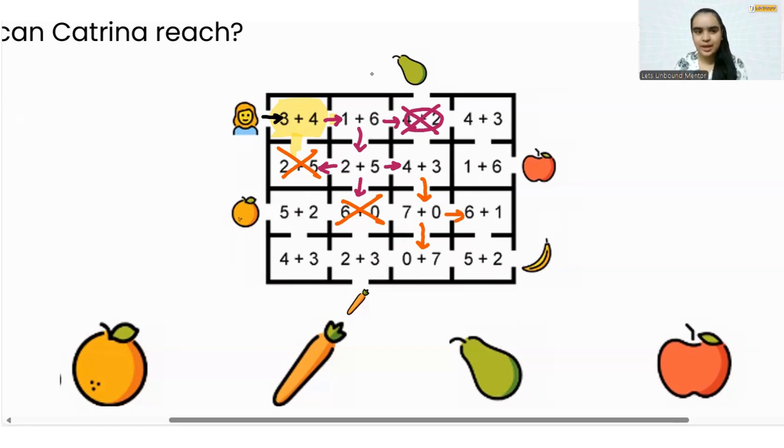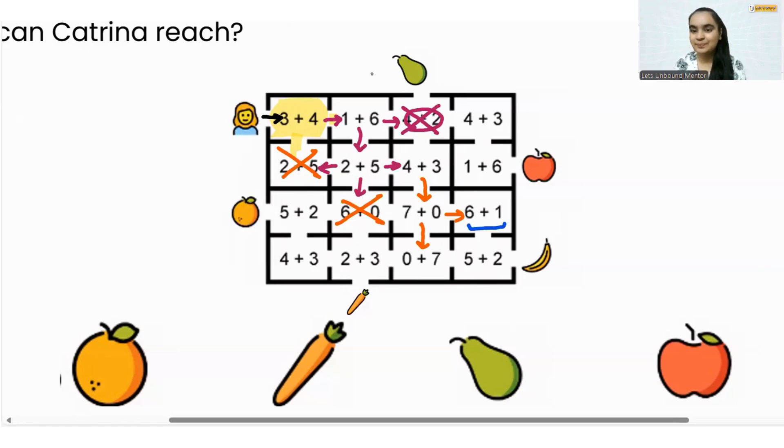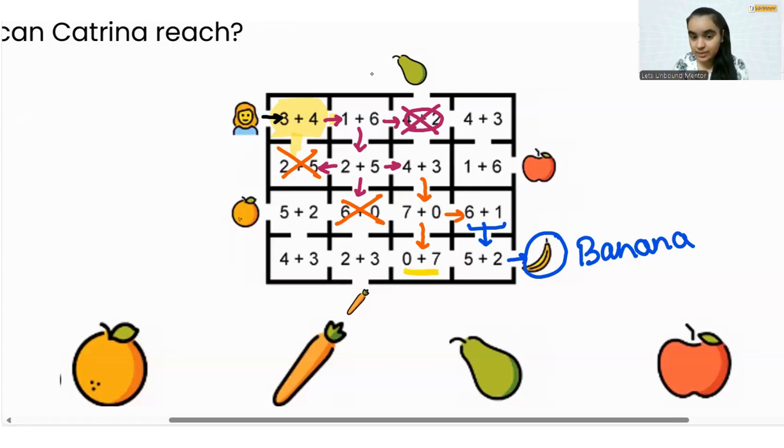So we will do both the ways. Okay, let's go to the right side first because 6 plus 1 is 7, and then we will go down. 5 plus 2 is 7 again, and we reached banana! Banana is the winner, yay!